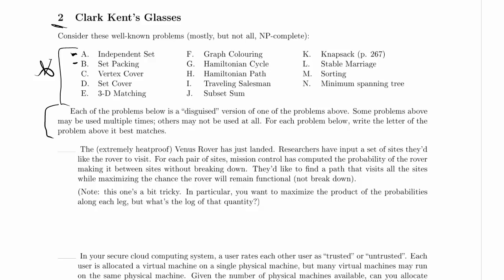In set packing, you're given a value n indicating you have the numbers 1 through n, and you're given a list of sets. Each set contains some, but not necessarily all, of those numbers. You're also given a threshold value k, and the question is: can you find a list of at least k of those sets such that no two chosen sets contain the same element? You can pack in at least k non-overlapping sets.